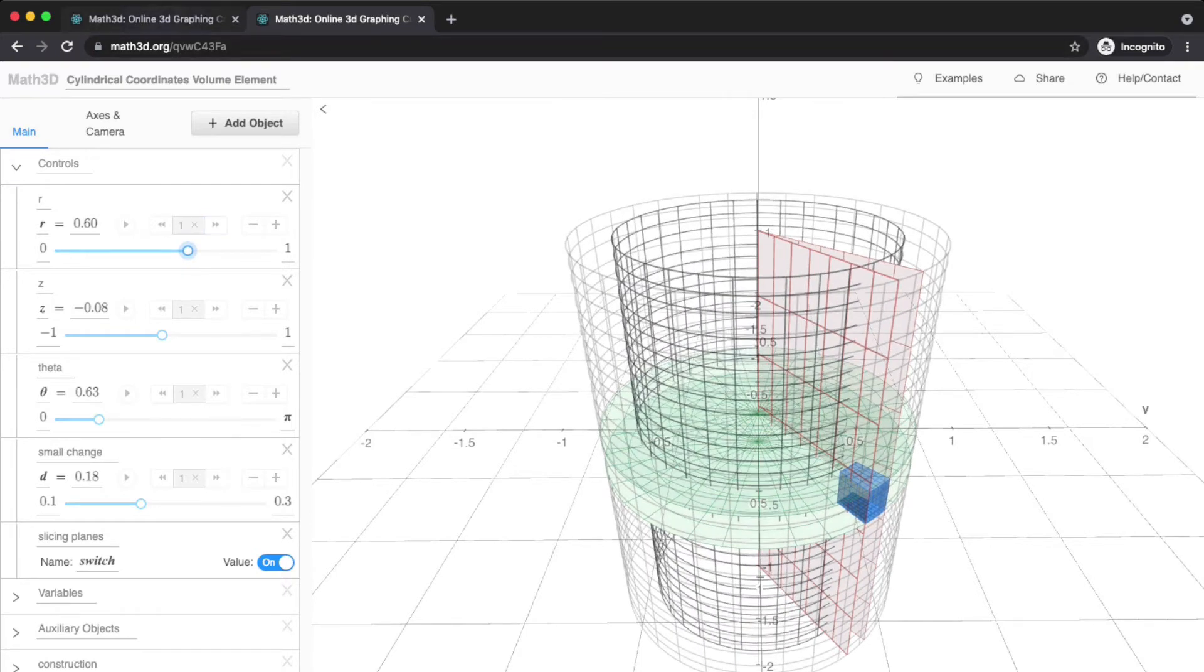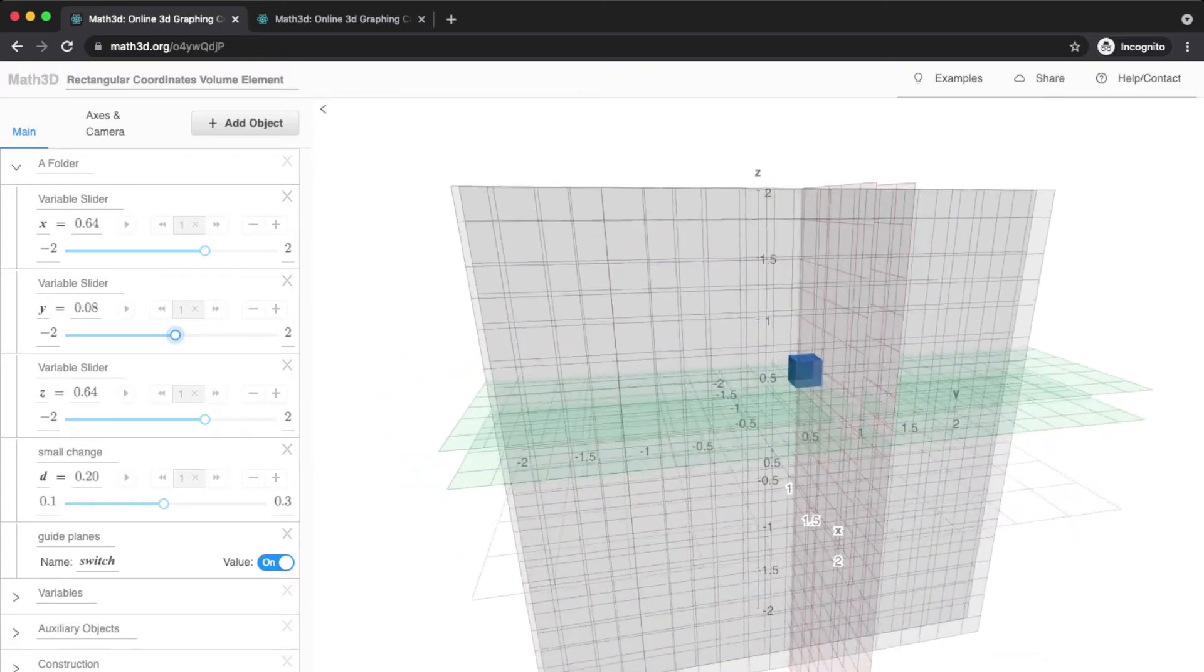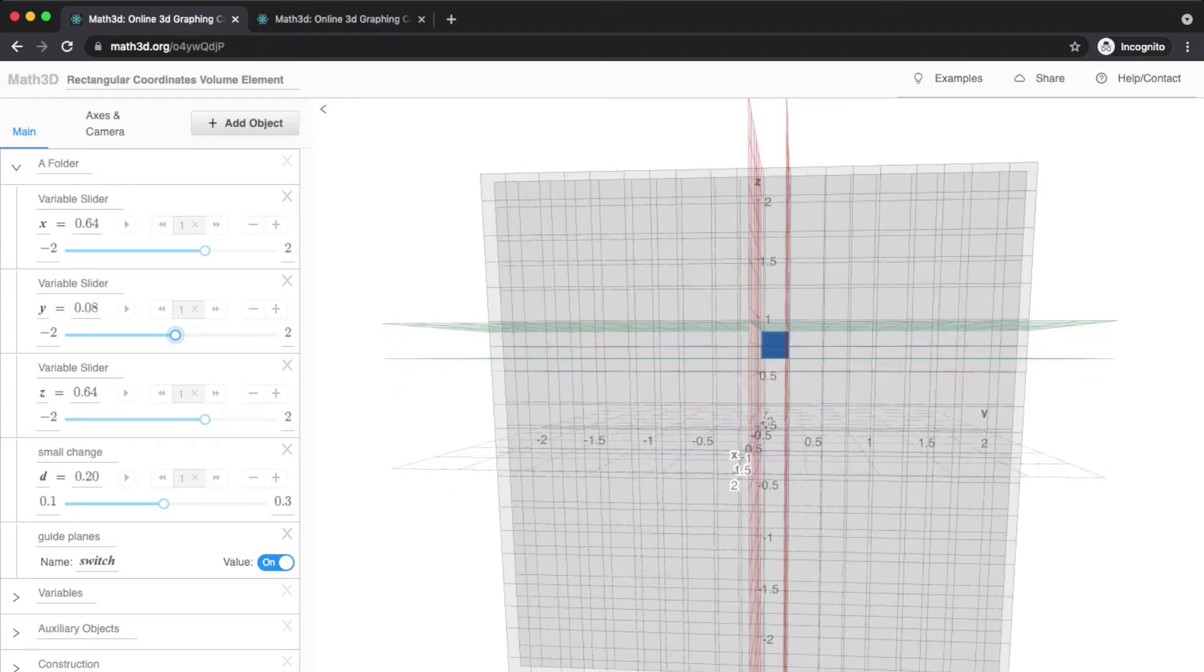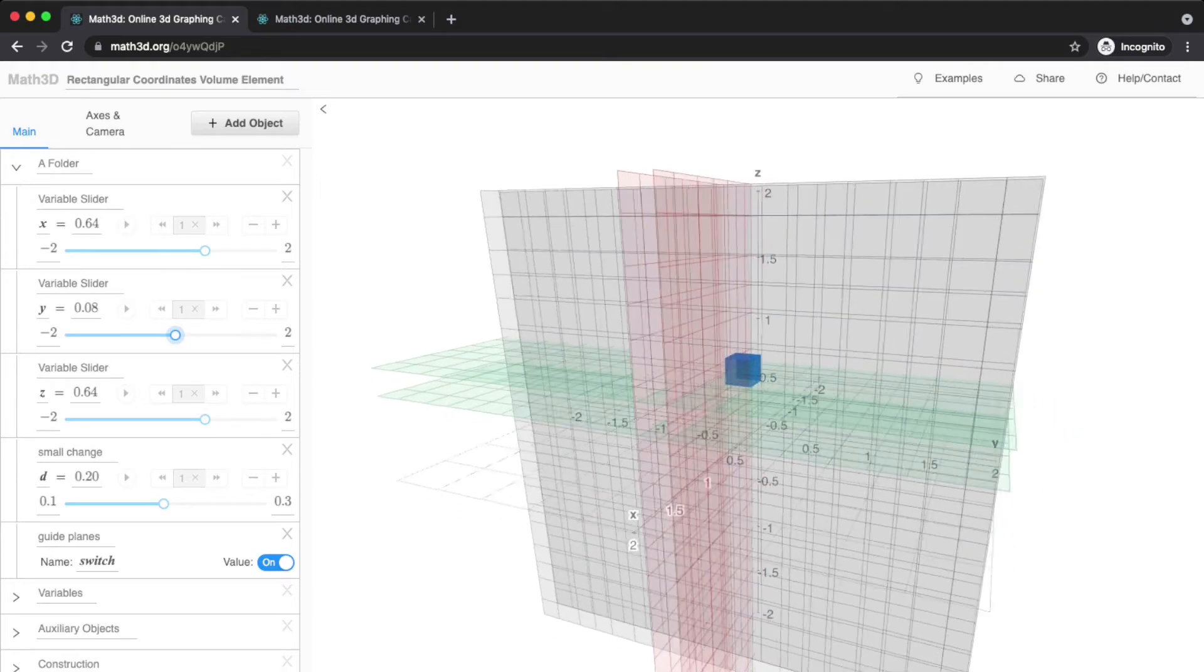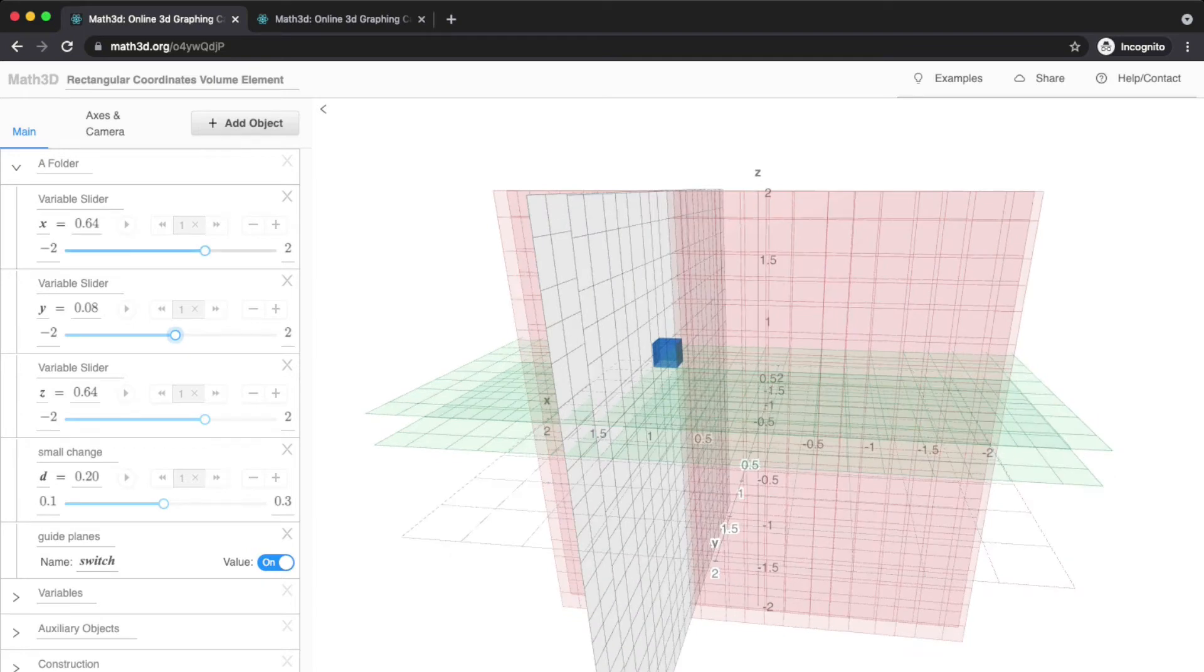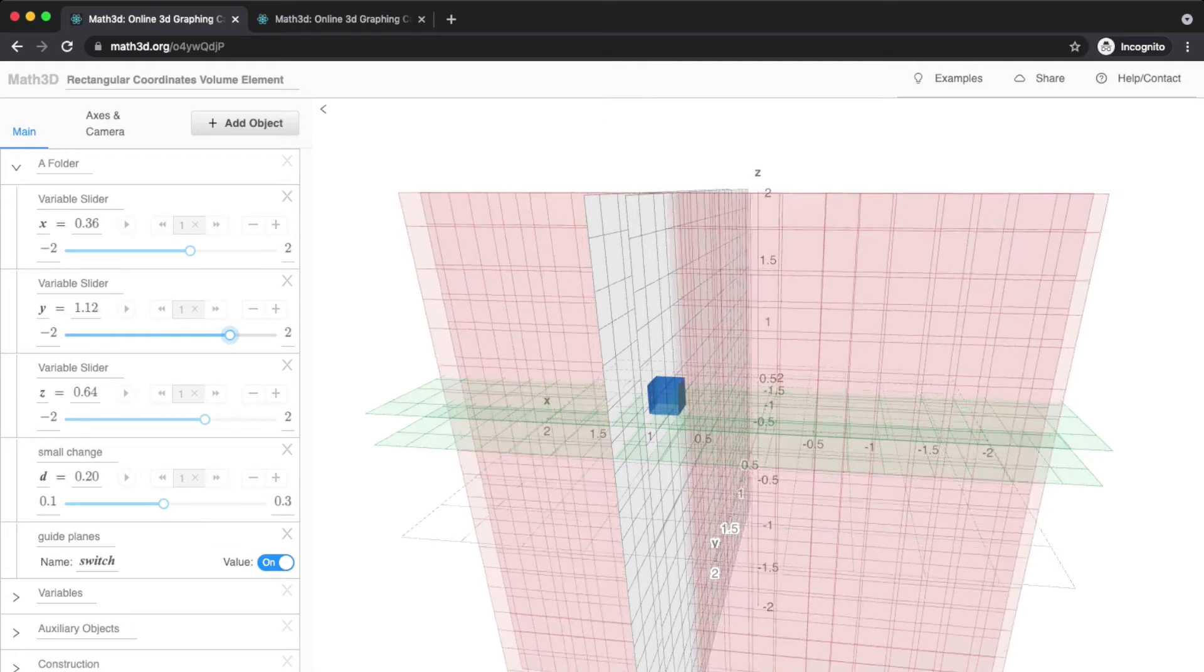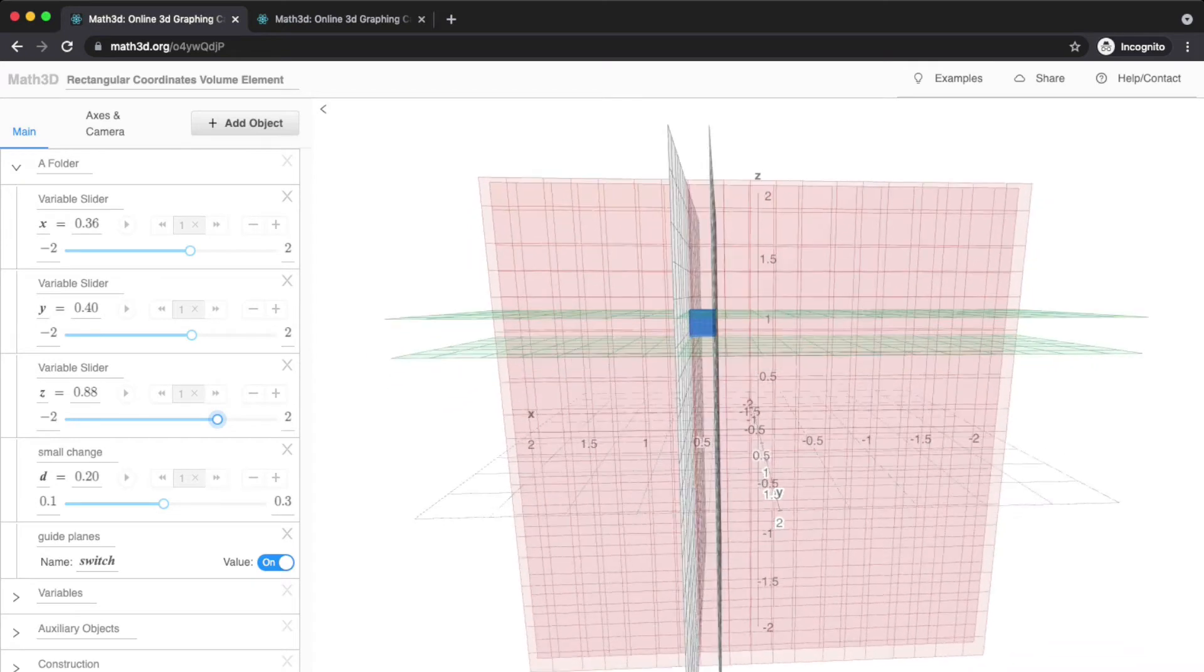This is unlike the rectangular coordinate system, where the volume of this rectangular box is trapped between two X values, two Y values, two Z values. The distance between the two green planes, the two Z values, is DZ. Distance between the two red planes is DY. The distance between the two gray planes, that's DX. As we move this box around, its shape isn't changing.